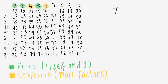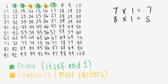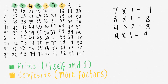The only way to get 7 is 7 times 1, so 7 is prime. 8 times 1 equals 8, but also 4 times 2 equals 8. Since there's more than just 8 by itself, that means that 8 is composite. 9 times 1 equals 9, but also 3 times 3 equals 9. That means that 9 is composite.